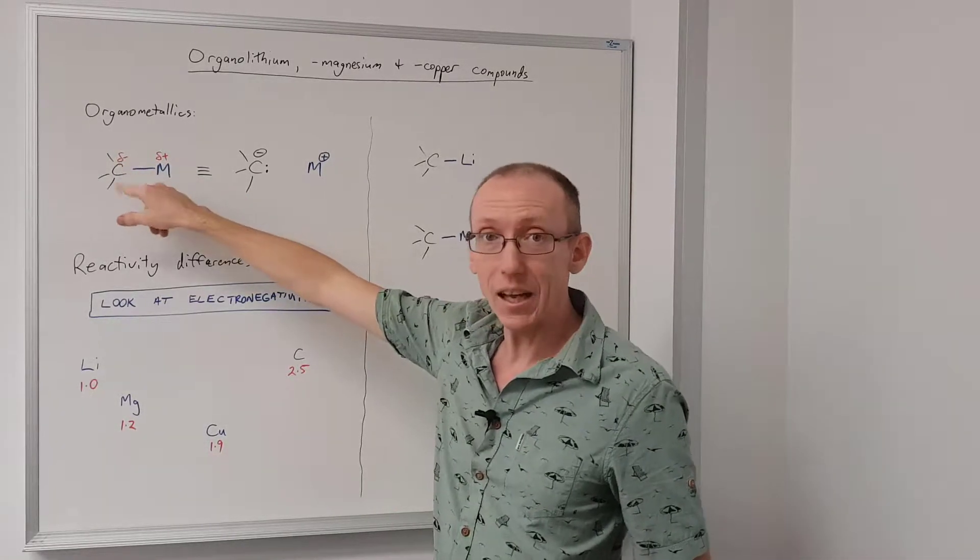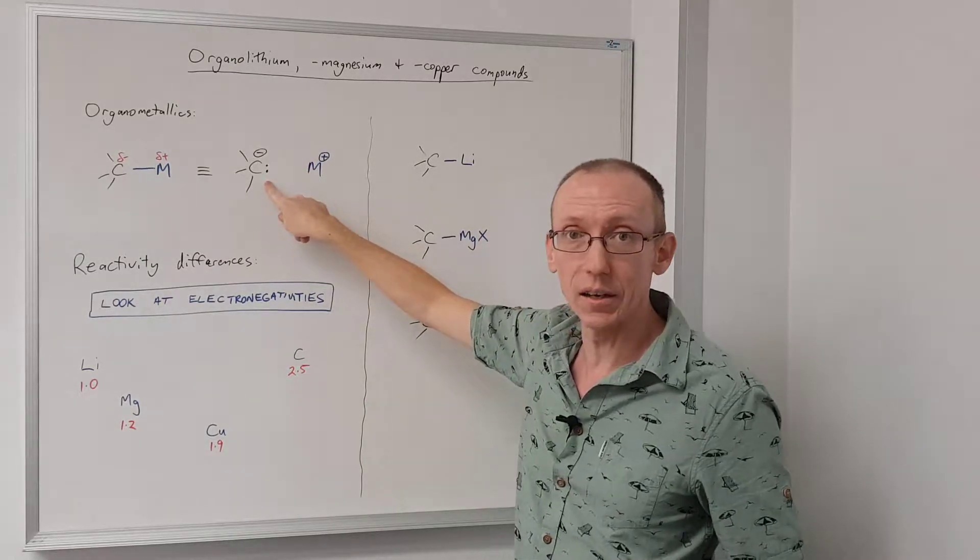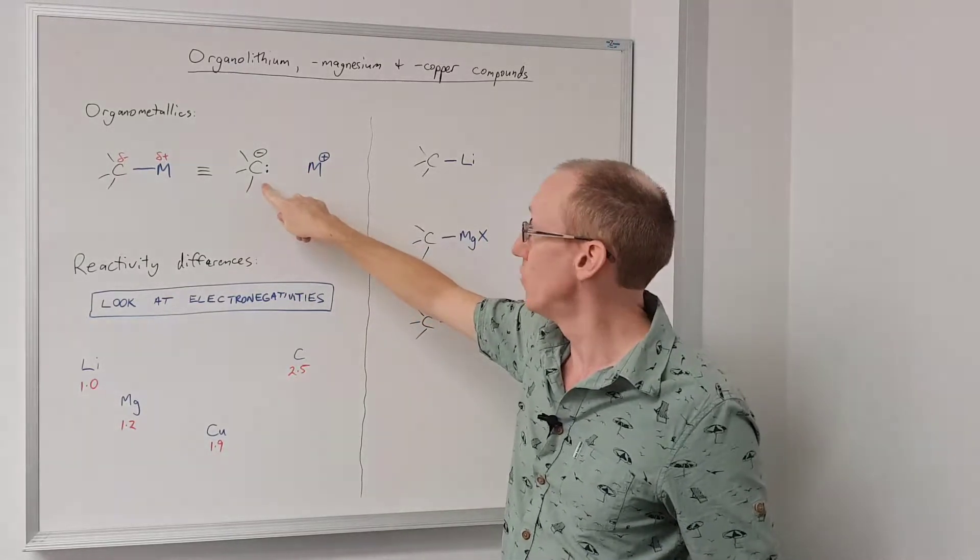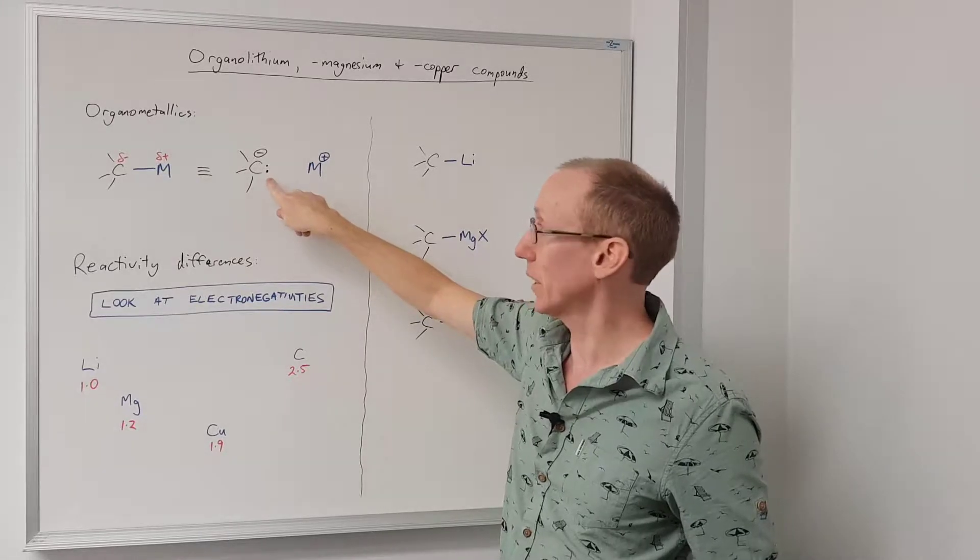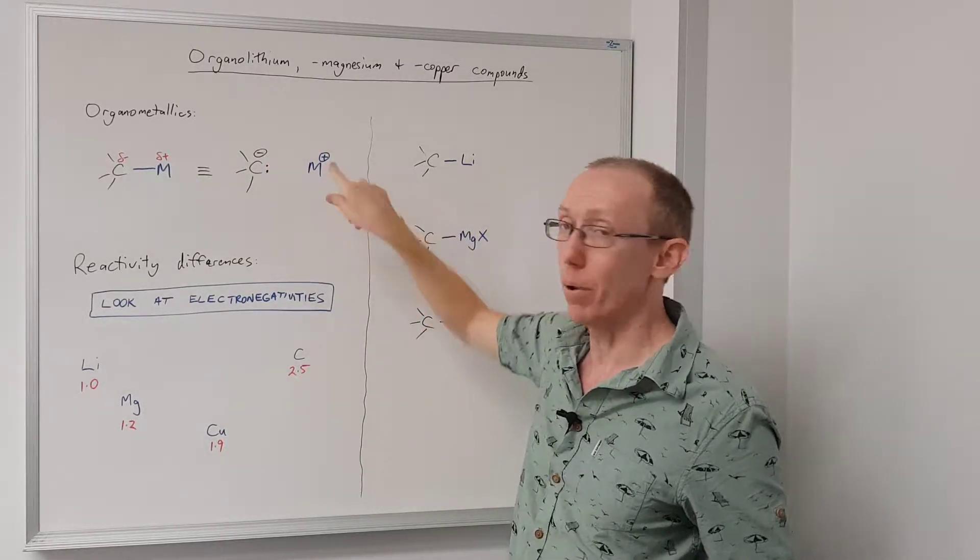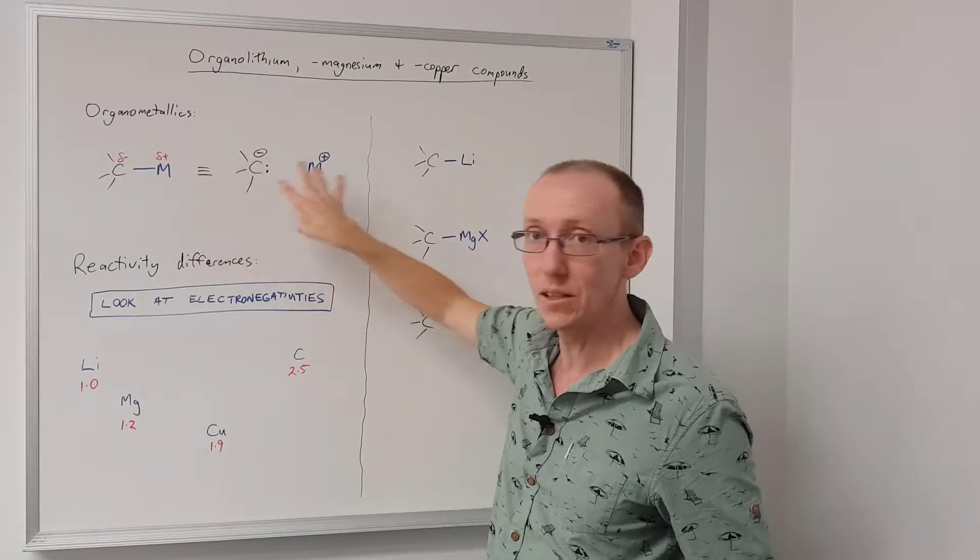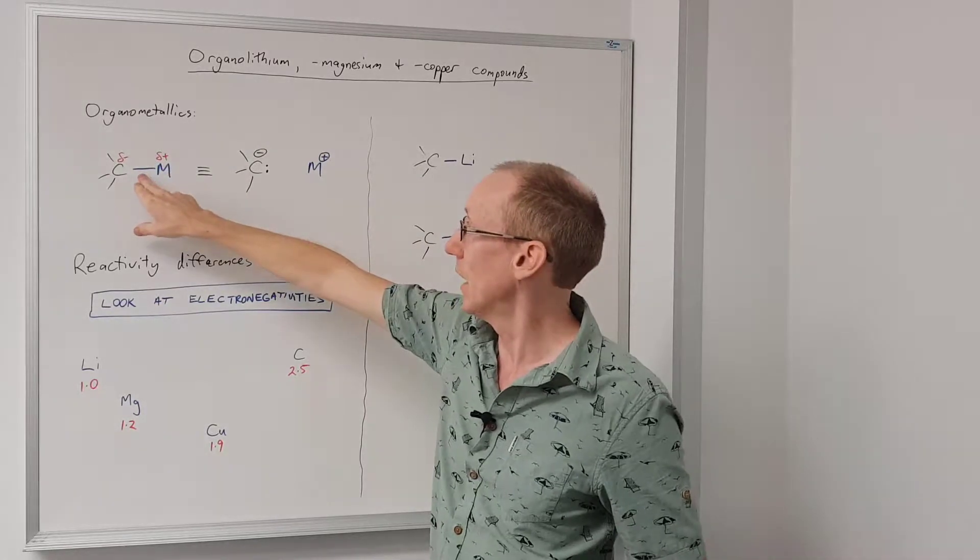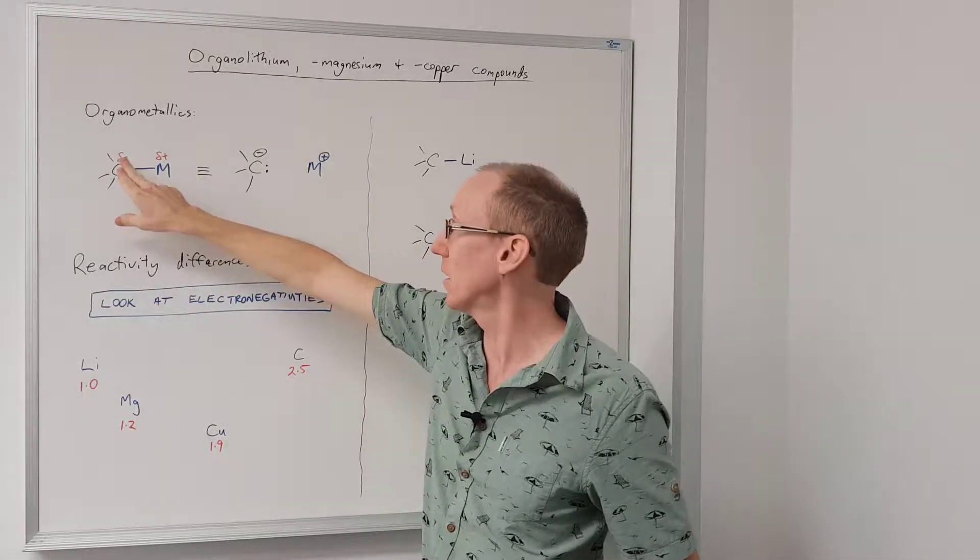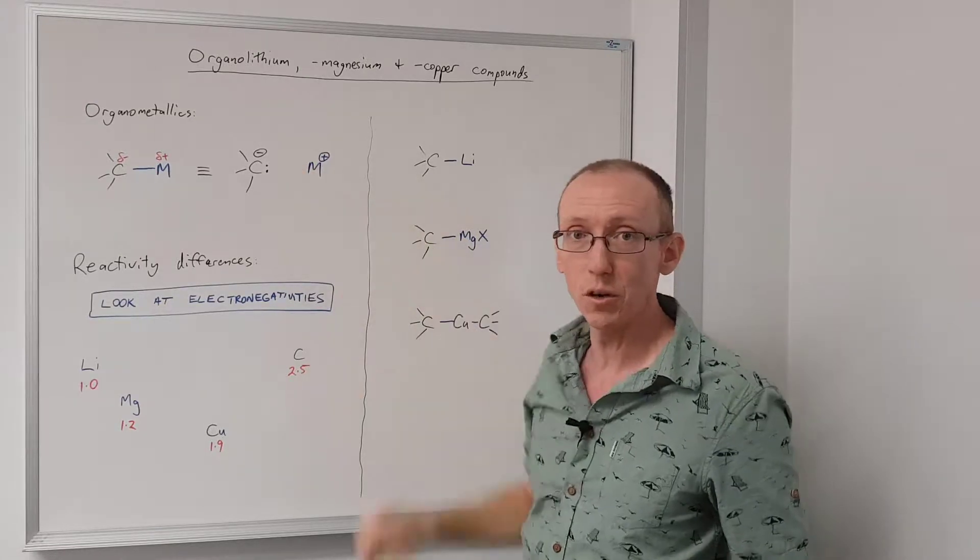So we can think of an organometallic reagent as having a fairly large carbanion reactivity. It looks a bit like a carbanion with the negative charge on the carbon and then a positively charged metal. So the structure of an organometallic is somewhere between these two extremes. It's a covalent bond that is either highly polarized or it's an ionic bond that has some partial covalent character.